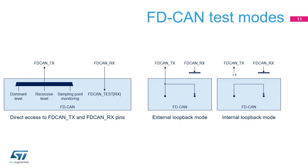The FDCAN controller supports two loopback modes entered through control bits in the FDCAN test and FDCAN CCCR registers. In external loopback mode, the FDCAN treats its untransmitted messages as received messages and stores them into RX FIFOs if they pass acceptance filtering; this mode is provided for hardware self-tests. To be independent from external stimulation, the FDCAN ignores acknowledge errors in loopback mode. Internal loopback mode can be used for a hot self-test, meaning the FDCAN can be tested without affecting a running CAN system connected to the FDCAN-TX and FDCAN-RX pins. In this mode, the FDCAN-RX pin is disconnected from the FDCAN and the FDCAN-TX pin is held recessive.